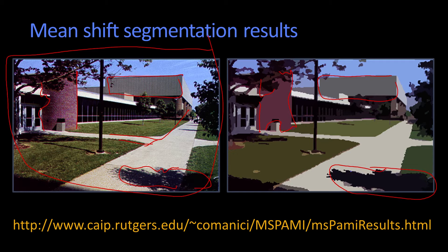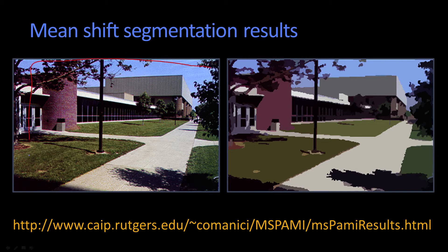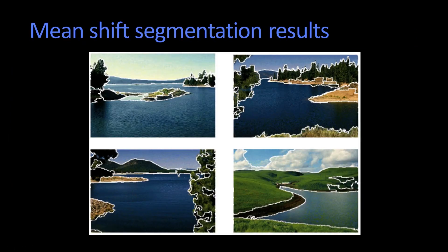I think you would agree that if you take a look at this picture and you were to draw boundaries around where the different clusters were, you would probably end up with an image that looked something like that. Here are some more examples of Mean Shift segmentation results, and you can see it does a pretty good job. Take a look at this picture — all the water is put into one cluster, this foliage is broken out nicely, the islands, etc. So if you've got the right feature space, it does a pretty good job of finding the clusters.